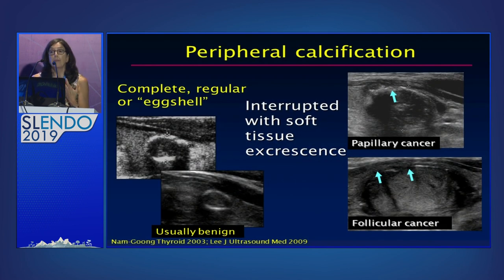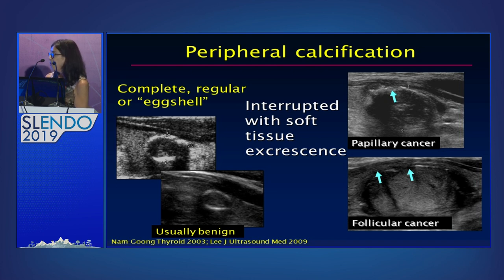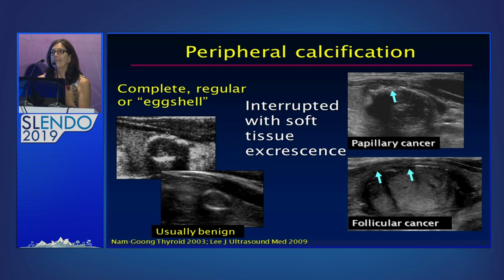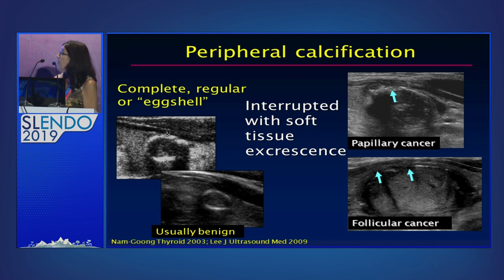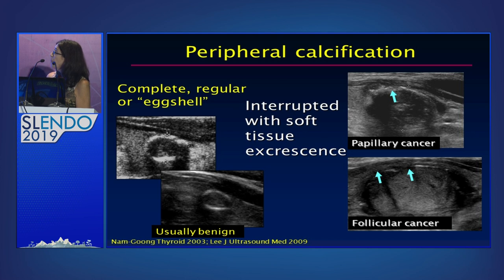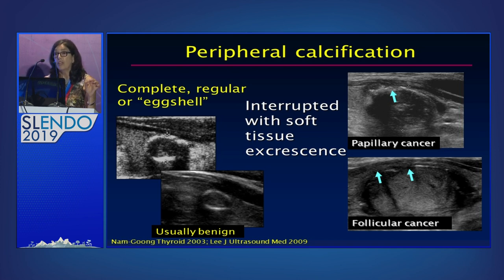Here are examples of peripheral calcifications. On the left, I know there is lots of ultrasound technology out there — this is the same nodule shown in two different image-processing formats. This is a nodule with complete regular eggshell calcifications, which is non-suspicious. However, this is the type of calcification we worry about: in these two different nodules, you can see that on the outside there are some calcifications, but where the blue arrows are, you can see there's an interruption in the calcification and an area of soft tissue indicating where the cancers have invaded through the calcification — often this is the area where you target your FNA. Both of these were carcinomas.